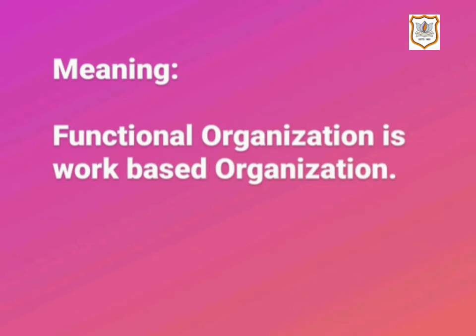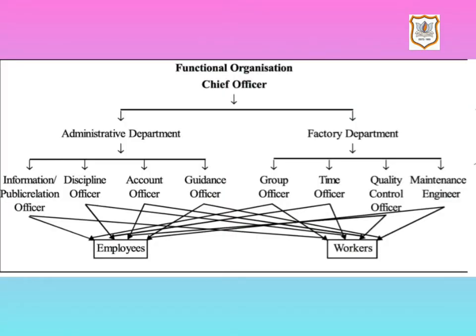Let's have a look at the formation of functional organization to be more clear about it. Here we have the chart of functional organization. As we know, functional organization gives more importance to work distribution and specialization, so here the work is divided as per the nature of work, and for each kind of work different experts are appointed.